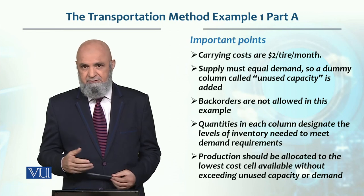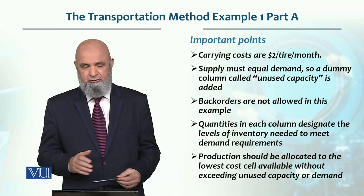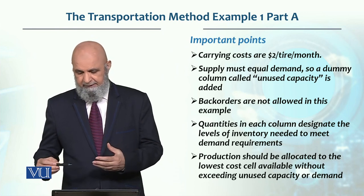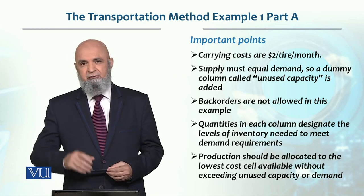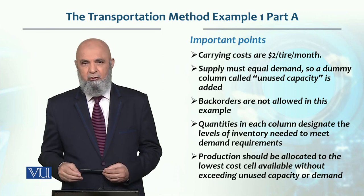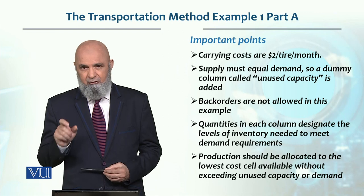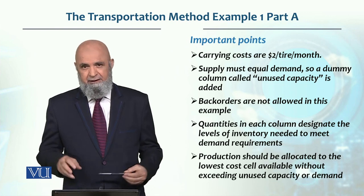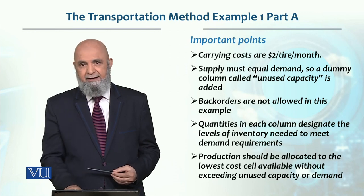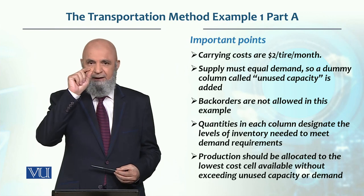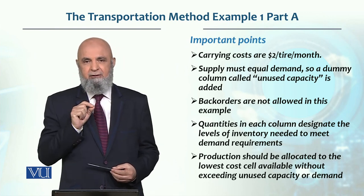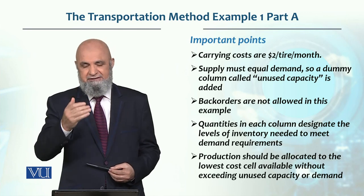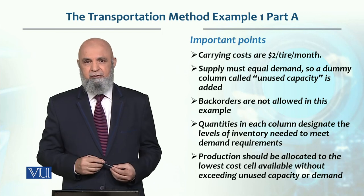Back orders are not allowed in this example — जैसे आपने देखा cross लगे हुए हैं। Each column की final value जो solution में होगी वो actually demand requirement है जो हमने meet करनी है through production या inventory। सबसे पहले lowest cost वाले cell को use करना है, और जब उसकी capacity fully utilize हो जाए तो next lowest की तरफ जाएंगे — इस तरह solution build up करना है।